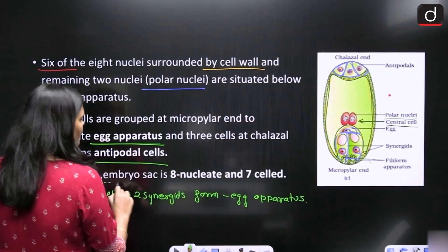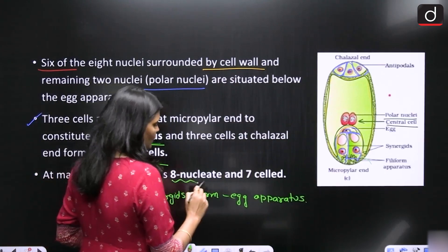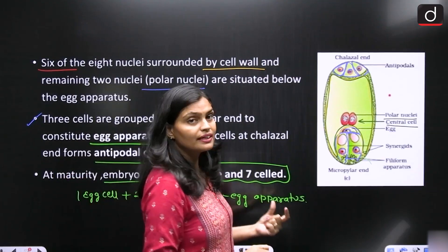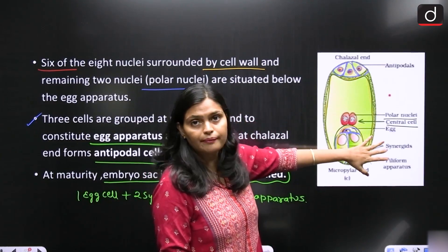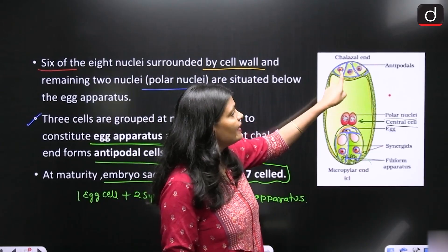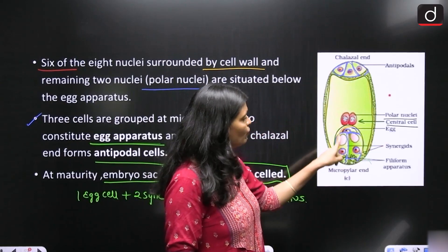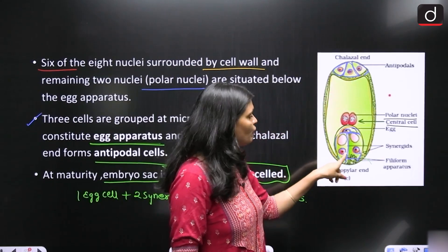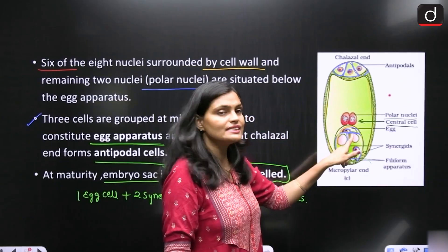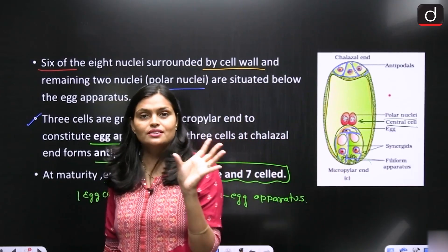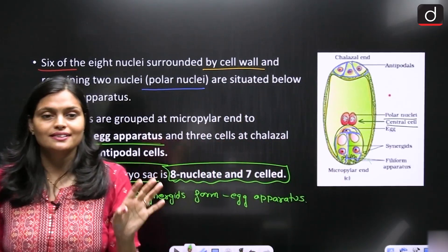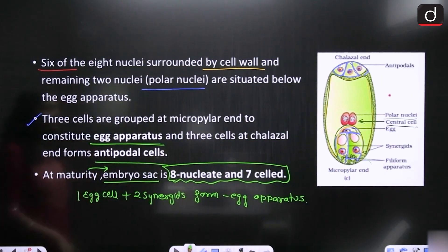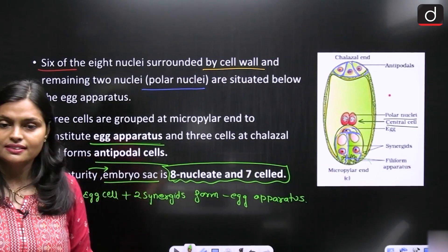At maturity, the embryo sac is 8-nucleate and 7-celled. It contains 8 nuclei total, but only 7 cells: the egg apparatus (1 egg + 2 synergids), 3 antipodal cells, and 1 central cell containing 2 polar nuclei. This mature structure is the 8-nucleate, 7-celled embryo sac.